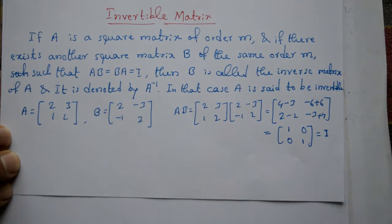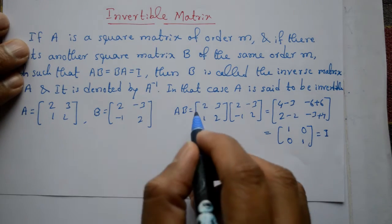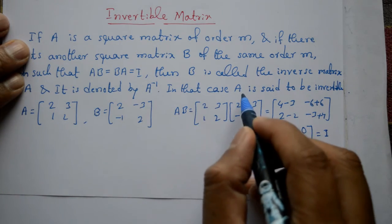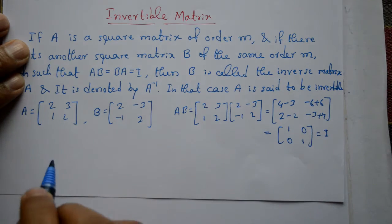So A into B identity matrix aega. Is case mein kya kehte hain, A is said to be invertible.